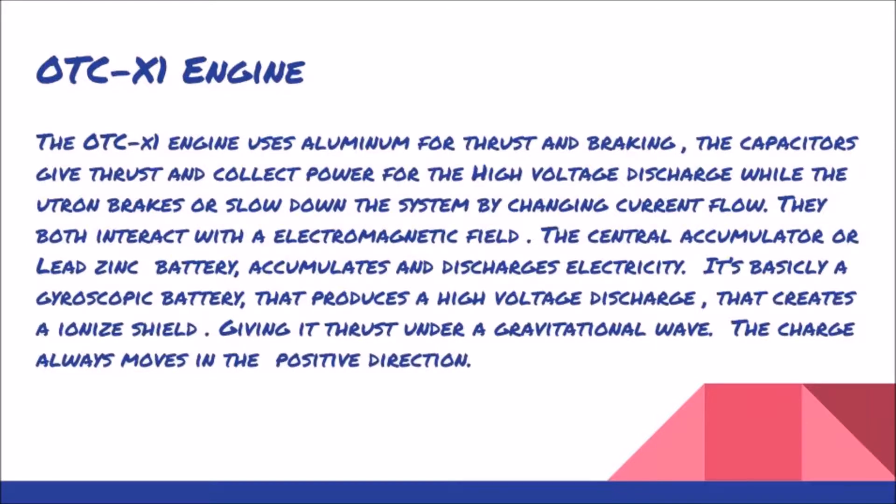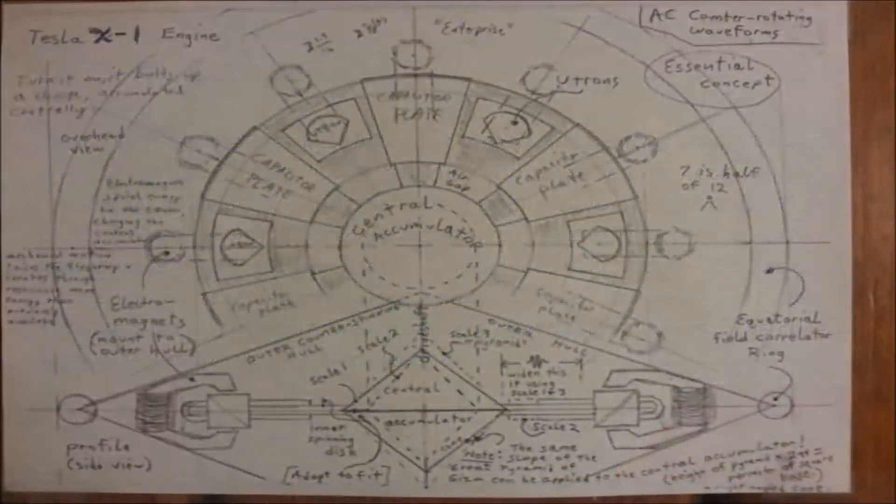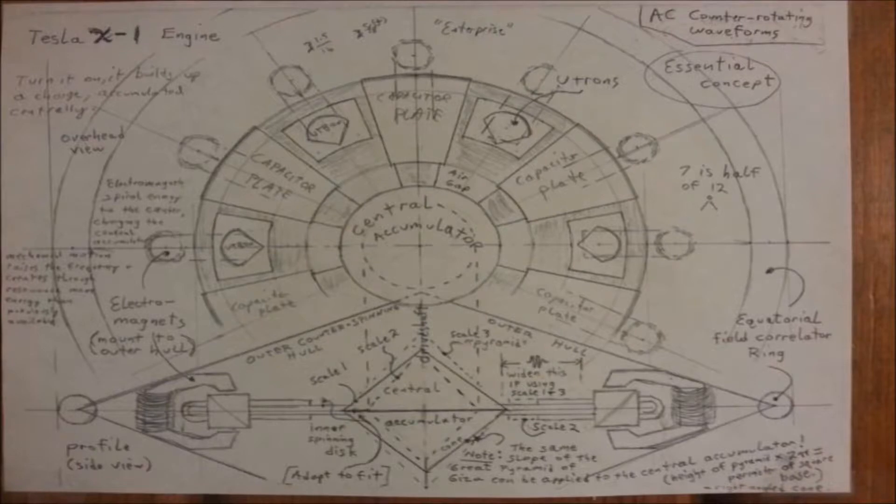Giving it thrust under a gravitational wave, the charge always moves in the positive direction. As we can see in this diagram, there are alternating U-shaped aluminum capacitor plates alternating with the eutron that is filled with electrolyte. These pass through a C-shaped coil of magnetic field as the central accumulator spins under its own mass.